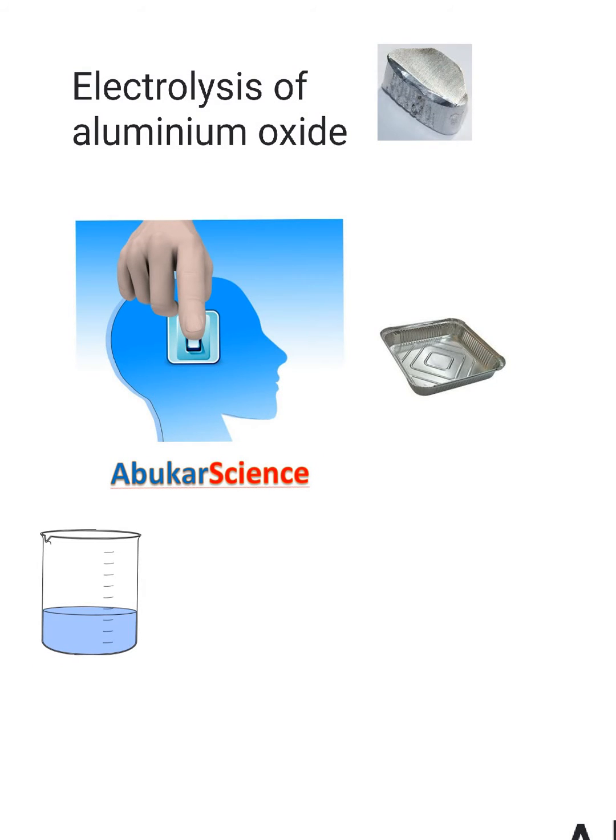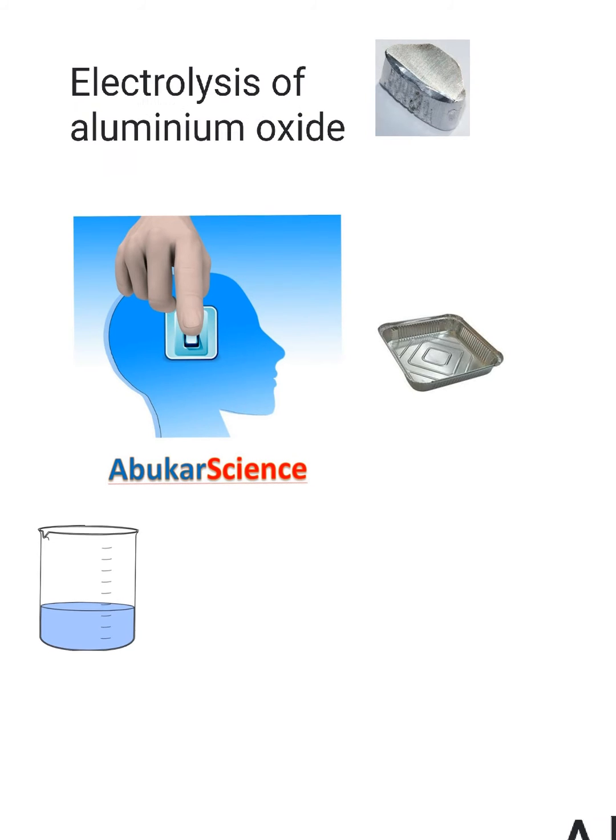Hello and welcome. In this video we're going to be learning about the electrolysis of aluminium oxide. Now the reason why we want to extract aluminium is because it's a very useful metal.